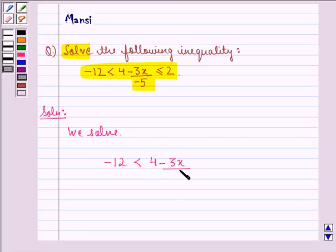- 3x/-5 ≤ 2, or we can say -12 < 4 + 3x/5 ≤ 2. Because here we take the negative sign to the numerator and this becomes 4 + 3x/5.